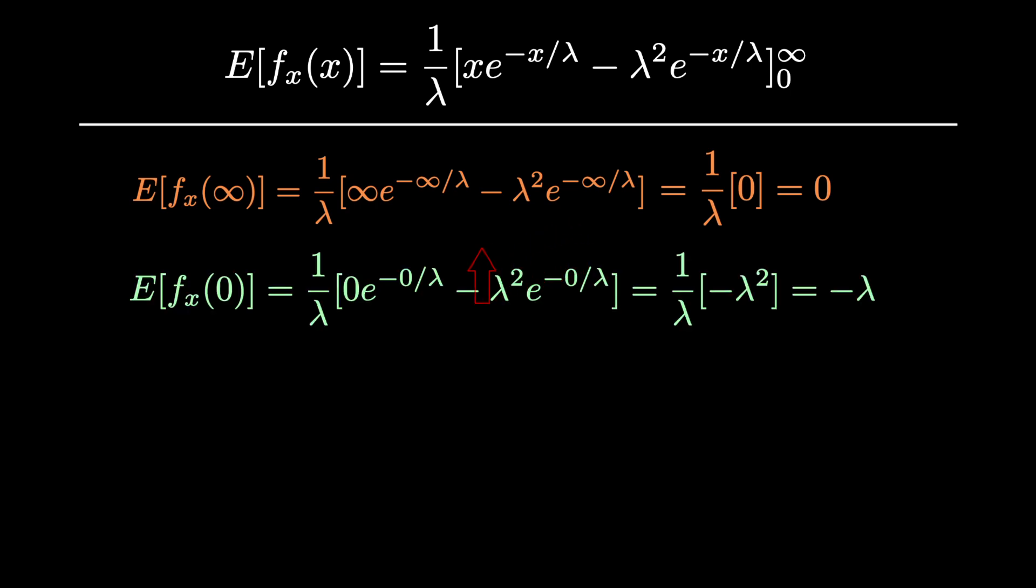Now when plugging 0 into our main equation, we're going to see that we're plugging 0 directly in for x, so our first segment is going to be equal to 0, and for our second part we're going to have